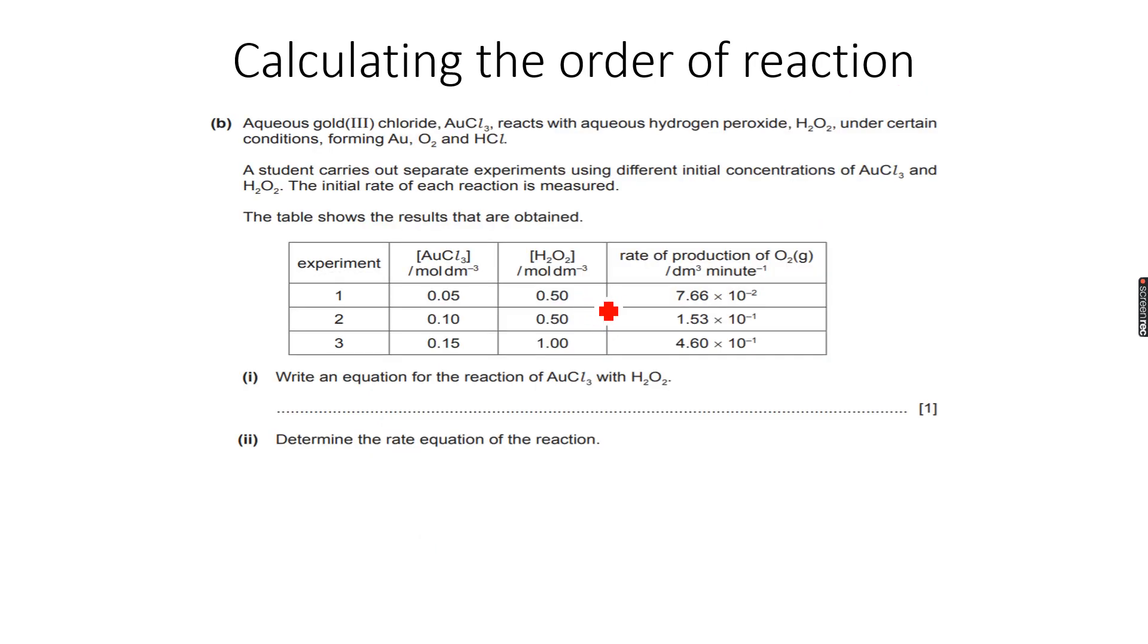Now we'll see how we can calculate the order of reaction. Let's do this question. Aqueous gold chloride, AuCl3, reacts with aqueous hydrogen peroxide, H2O2, under certain conditions.